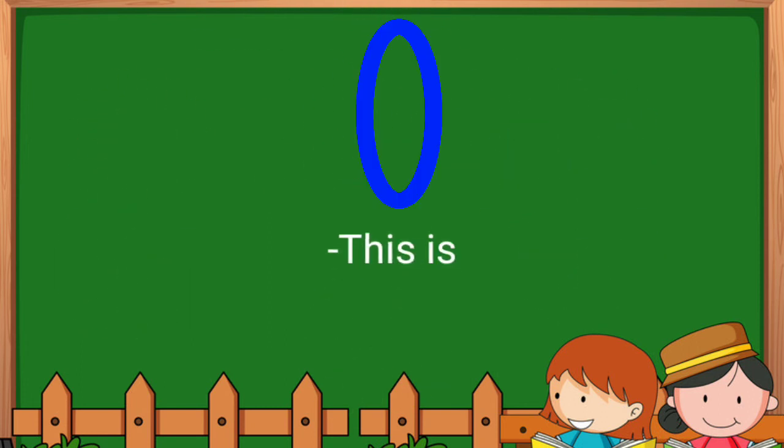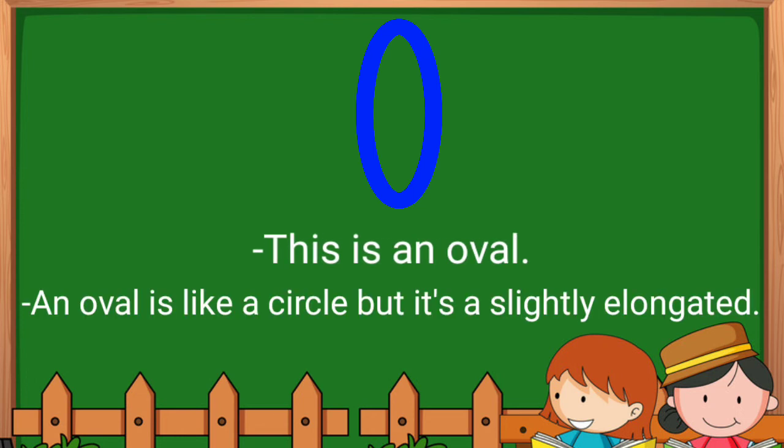Oval. This is an oval. An oval is like a circle but it is slightly elongated.